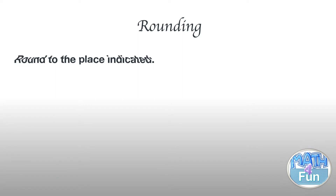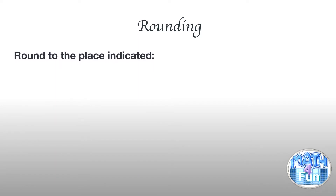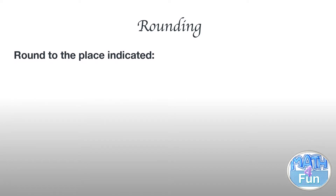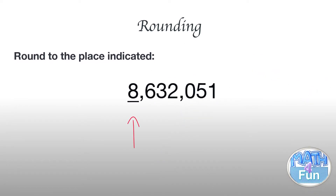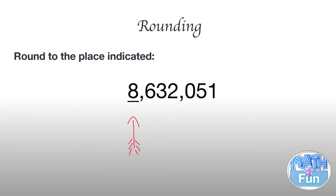Hello and welcome to Math for Fun. In this video I'm going to show you how to do rounding numbers. They are asking you to round each number to the place indicated. You will find numbers underlined, so here there is a dash under the 8, which means that we have to round this number to the nearest million.